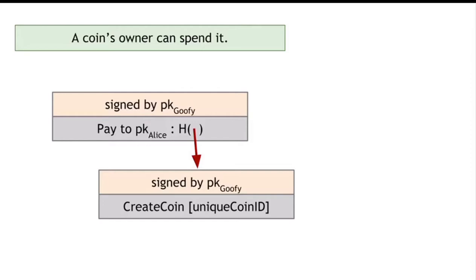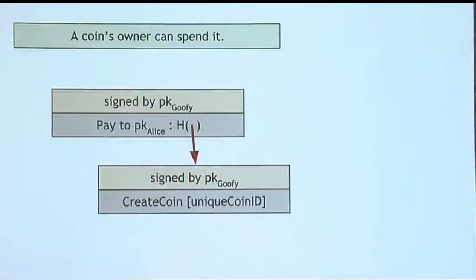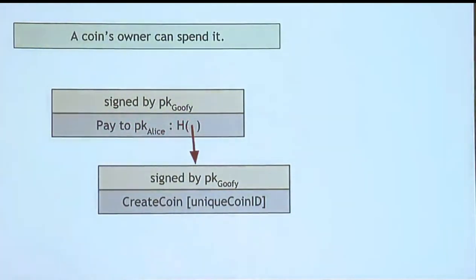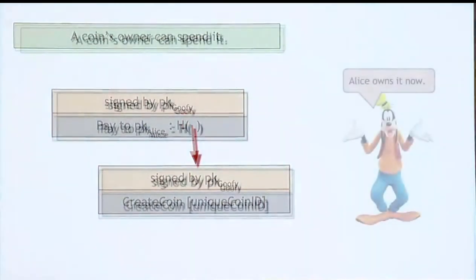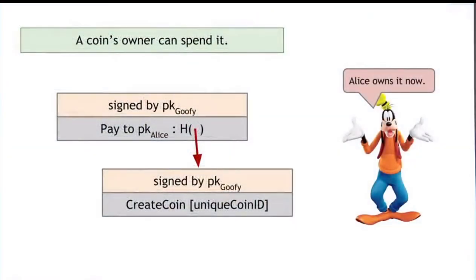The second rule of Goofy coin is that whoever owns a coin can pass it on to someone else — they can spend it. Here we have the coin that Goofy created, and now we take a hash pointer to that coin and create a statement. Goofy makes a statement saying pay this to Alice, who is named by a public key. Pay to public key Alice the coin represented by this hash pointer, and this is also signed by Goofy. Goofy is the one who owned that coin, so Goofy has to sign any transaction that spends the coin.